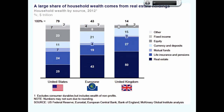We can see that in the United Kingdom, 50% of household wealth is a consequence of real estate values, so a significant contraction in property prices would lead to a significant contraction in personal wealth in the United Kingdom. In the Eurozone, 43% of household wealth is accounted for by real estate. But in the United States it's only 25%. So the United Kingdom is very susceptible to economic contraction resulting from a fall in property prices.